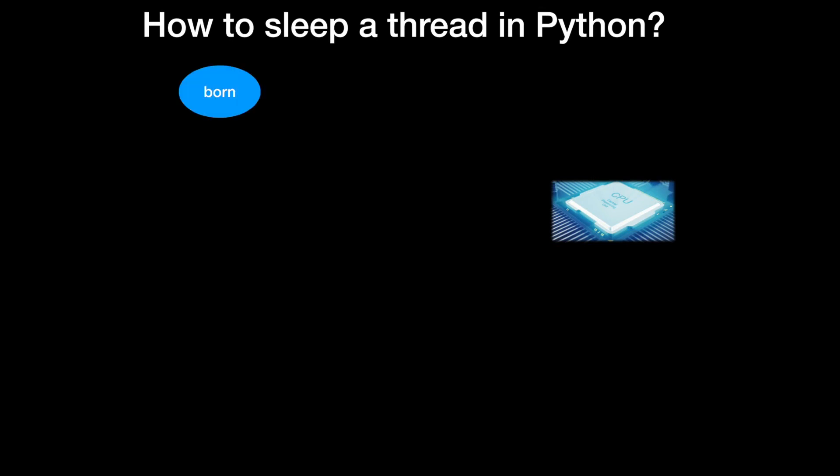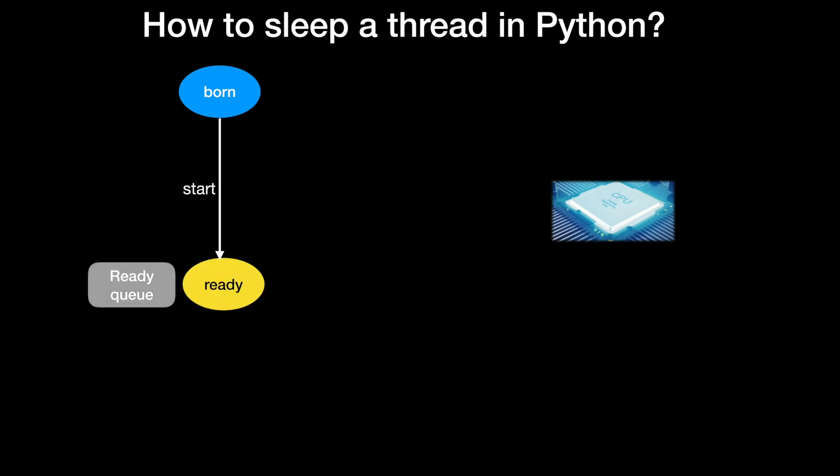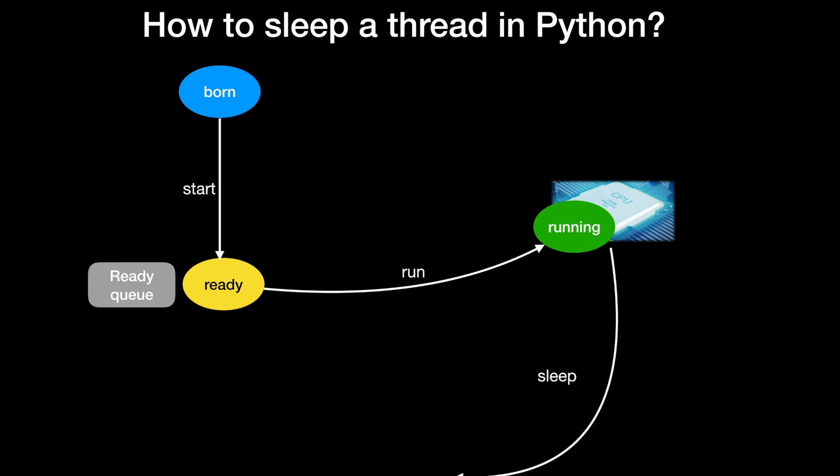Let us see the various states involved in this. The moment we create a thread we can say that its state is born state. Then we have to change its state from born to ready state by calling the start method, and later when it enters into the processor we can say that its current status is running state. The run is a predefined method which we have to override, which contains the necessary task to be carried out by that particular thread. There is also a method called sleep which temporarily suspends the execution of a particular thread for a particular amount of time.